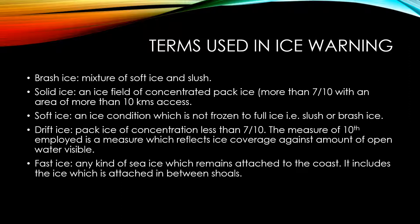We now move on to some of the terms used in ice weather warnings. Brash ice is a mixture of soft ice and slush. Solid ice is an ice field of concentrated pack ice more than 7 by 10, with an area of more than 10 kilometers. The measure of tenths is a measure which reflects ice coverage against the amount of open water visible. Soft ice is an ice condition which is not frozen to full ice, that is, slush or brash ice.